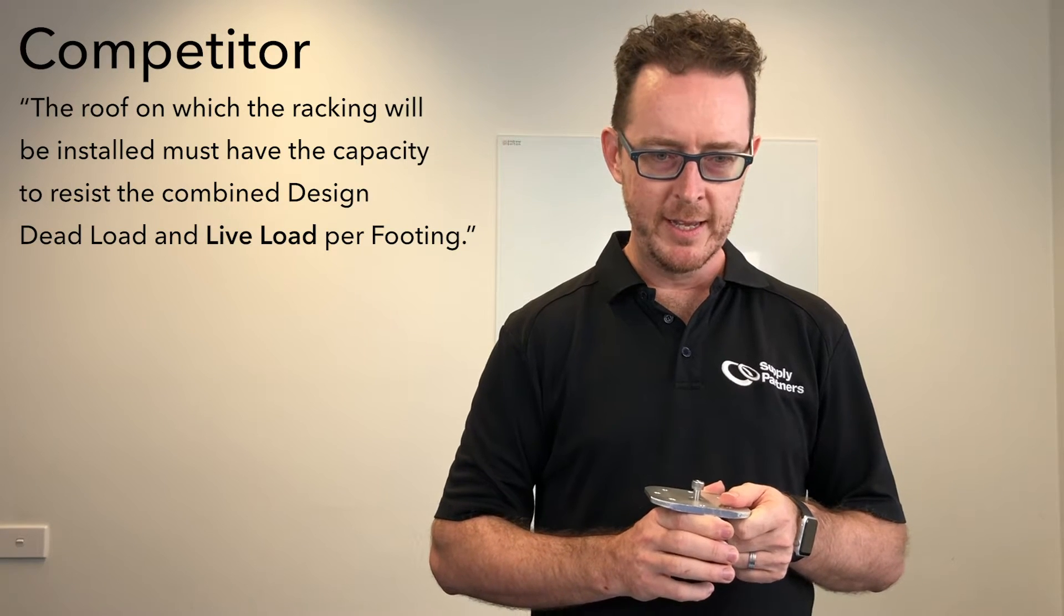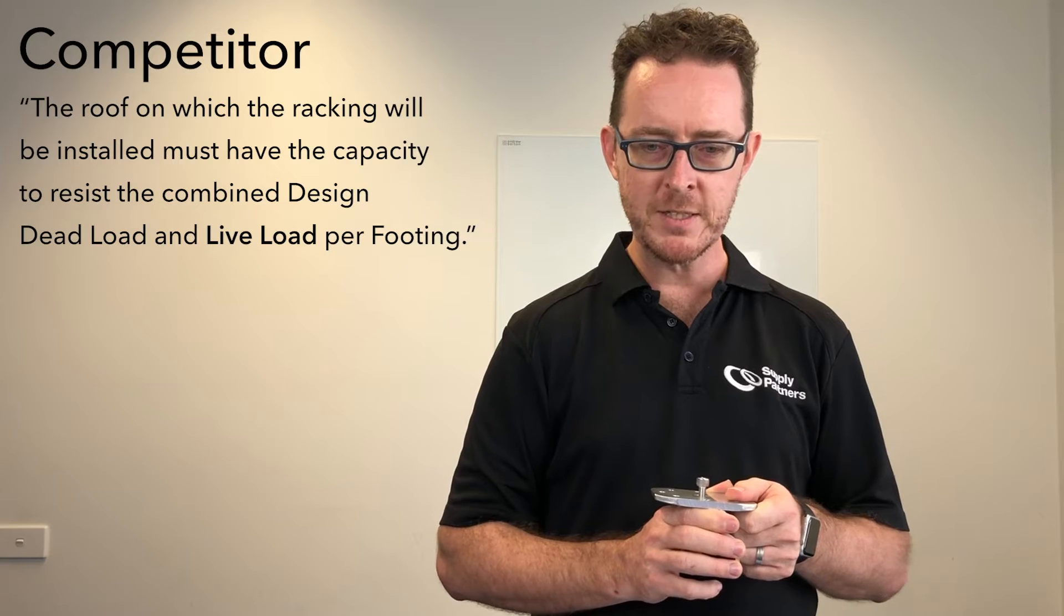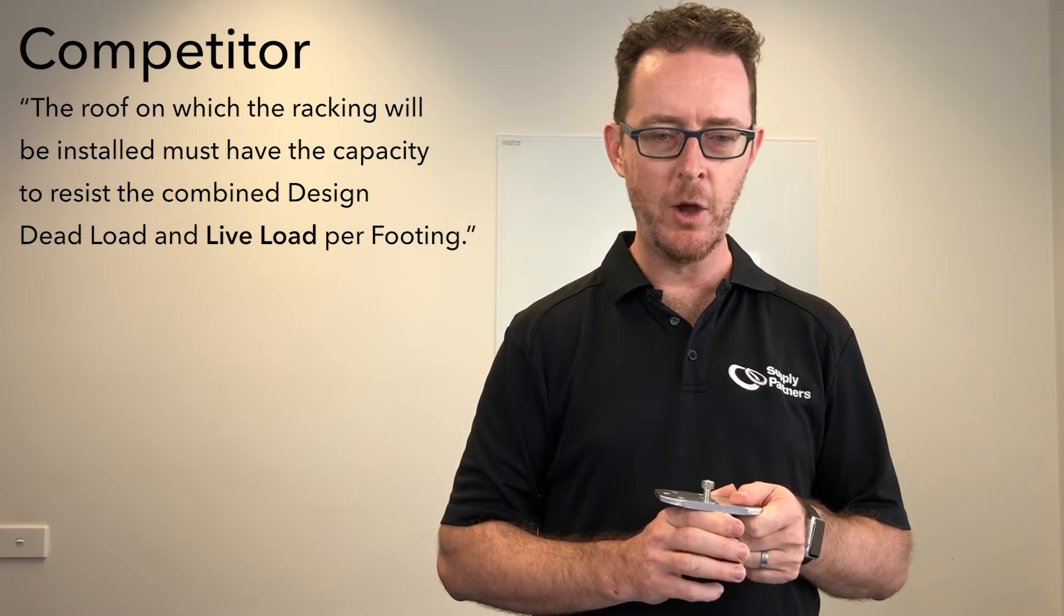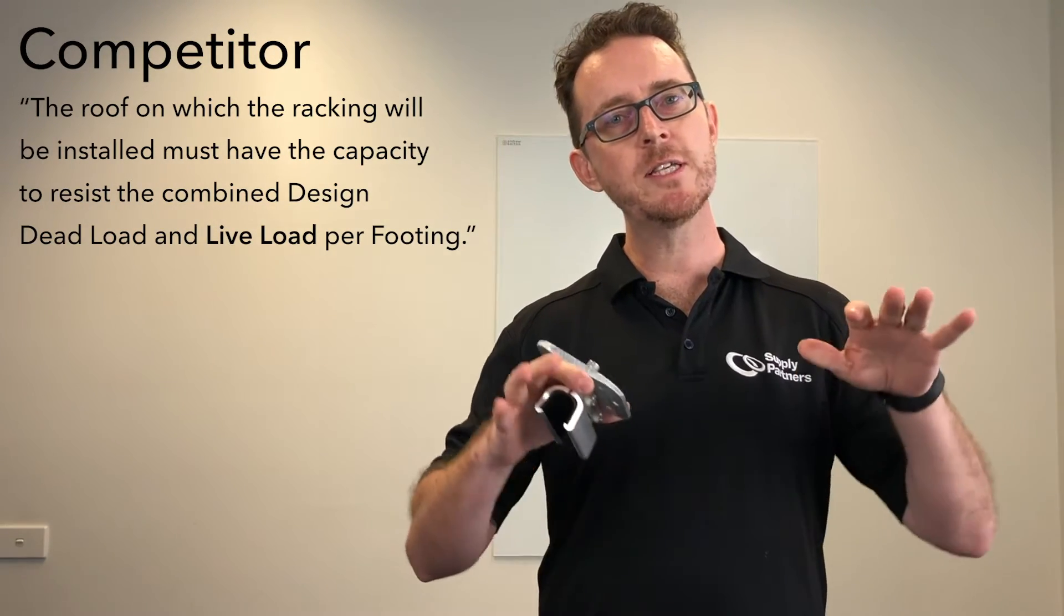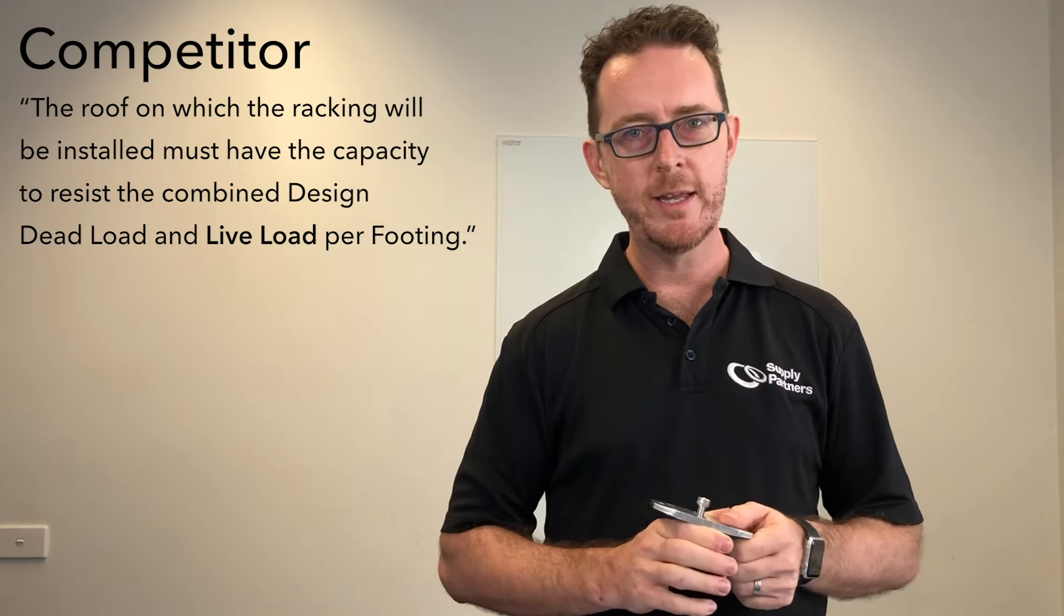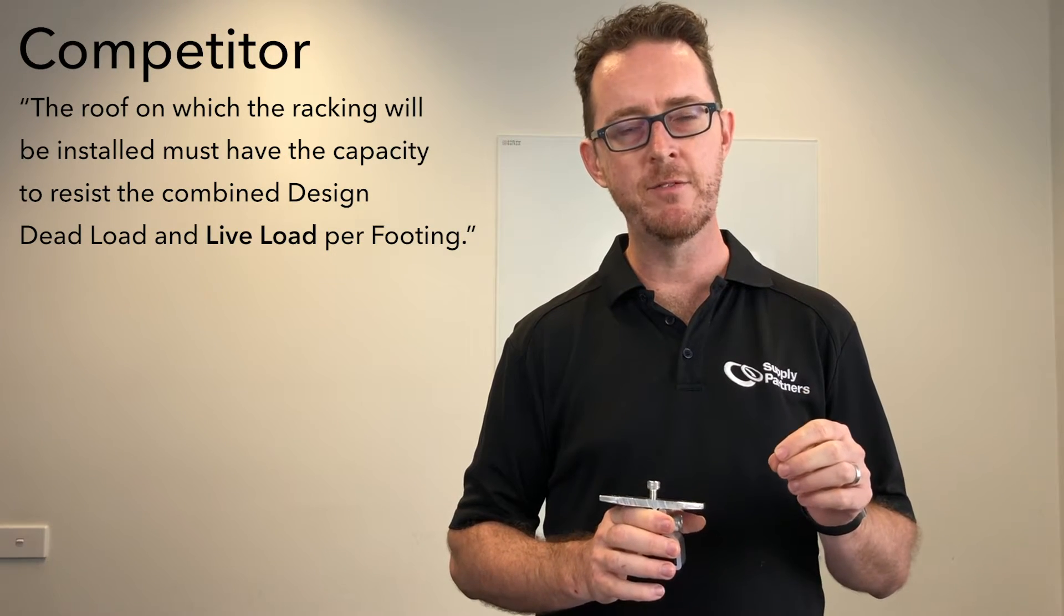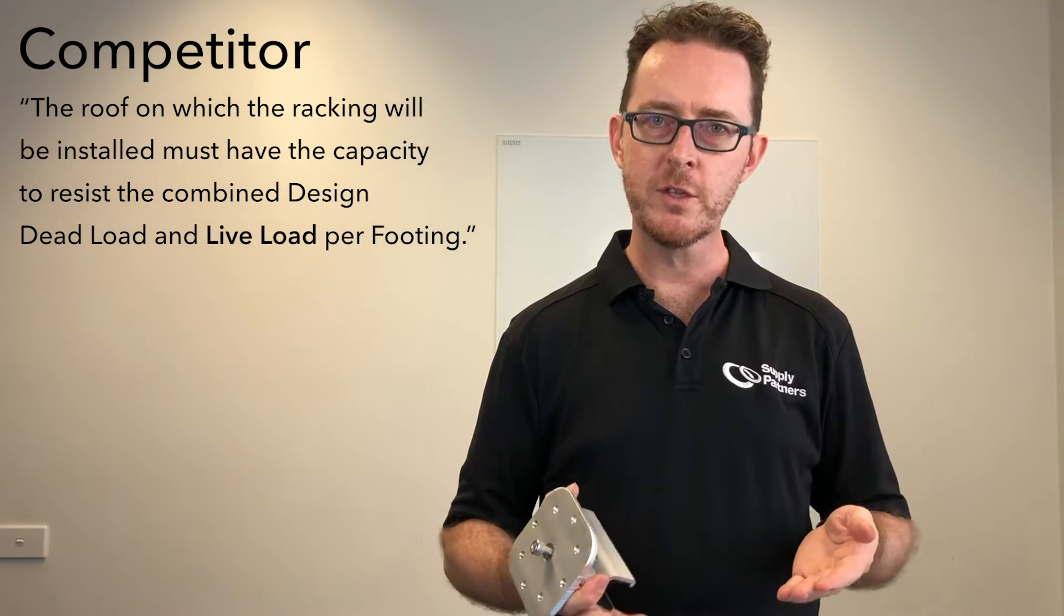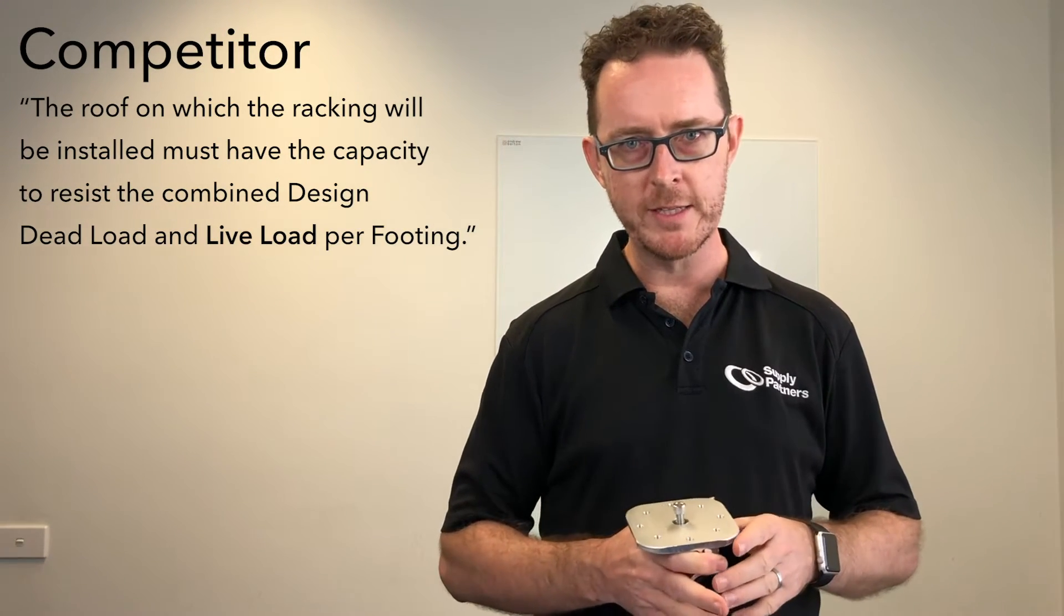Reading from a Cliplock Roofs competitor's document, it says, the roof on which the racking will be installed must have the capacity to resist the combined design dead load and live load per footing. Now the dead load is the weight, largely we can ignore that, the weight of a PV array is relatively small on a per square meter basis. But the live load refers to the uplift underneath the modules during a high wind event.